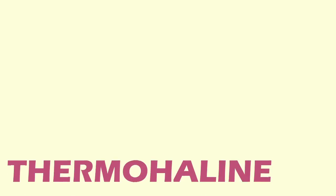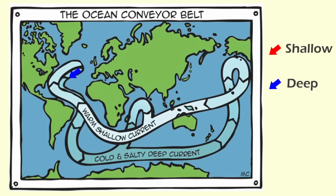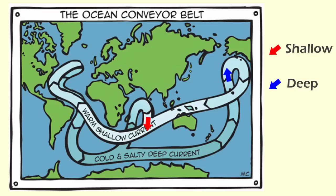Finally, the water movement, driven by density differences, creates what we call thermohaline circulation. Thermohaline circulation moves a massive current of water around the globe, from northern oceans to southern oceans and back again.